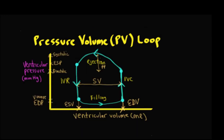So now let's review the basics of the pressure-volume loop. On the y-axis we have ventricular pressure in millimeters of mercury, and on the x-axis we have ventricular volume in mils of blood. We start in the lower right corner where we have the end diastolic volume — the maximum volume — and the end diastolic pressure. As the ventricle depolarizes and begins its contraction, the AV valves close and the pressure rises for IVC.